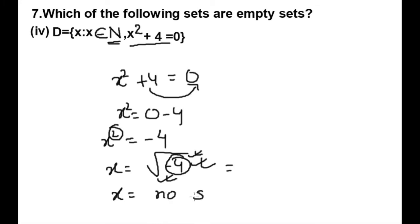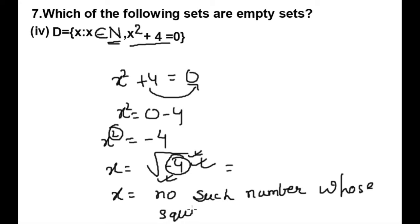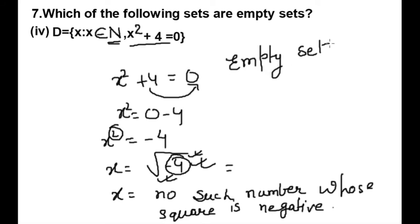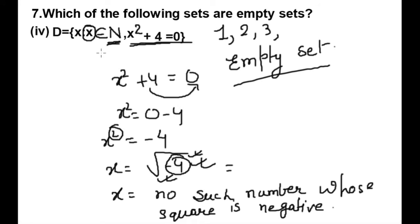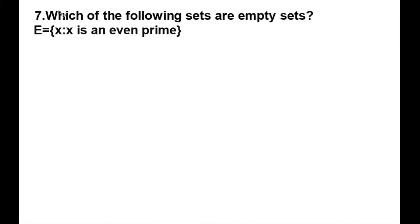There is no such number whose square is negative. This means D is also an empty set. Furthermore, this is the set of natural numbers, which starts from 1: 1, 2, 3, 4 — there is no point of a negative result. There is no such number which fulfills this equation, so D is also an empty set.